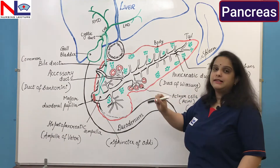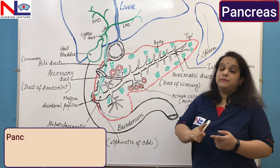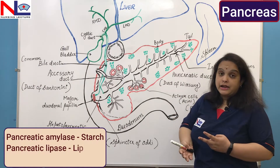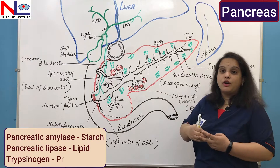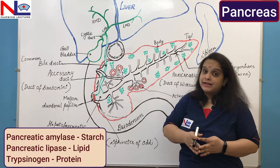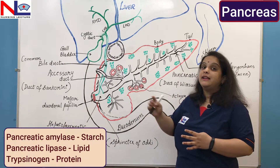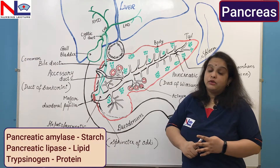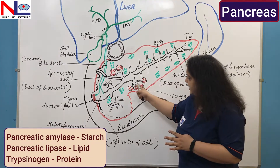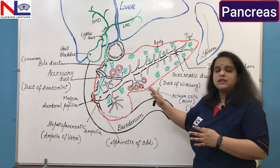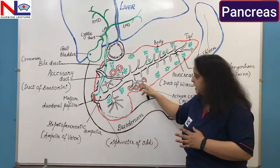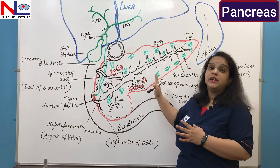The acinar cells release enzymes including pancreatic amylase, which helps in digestion of starch; pancreatic lipase, which helps in digestion of fat (triglycerides into fatty acids and glycerol); and the proteolytic enzyme trypsinogen. Trypsinogen is released in inactive form — if it were activated inside the pancreas, it would cause damage to the pancreatic cells.